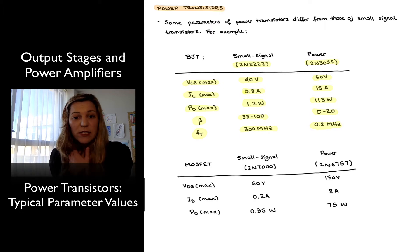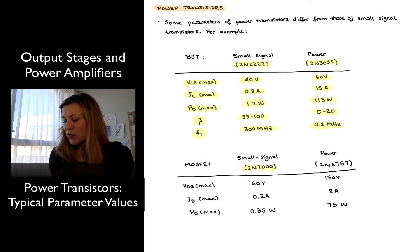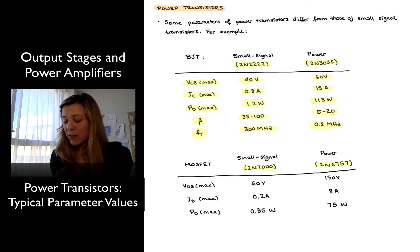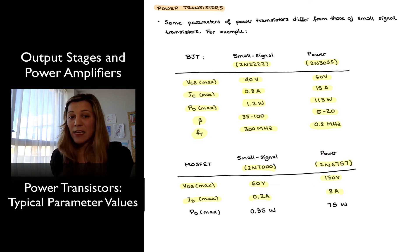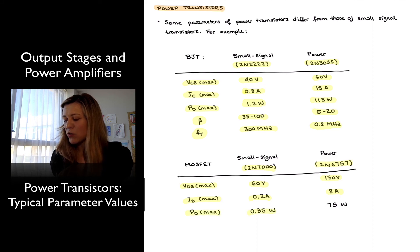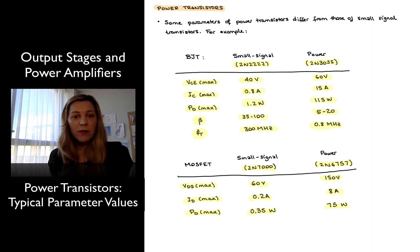In the case of MOSFET transistors, we can also compare a small signal MOSFET, the 2N7000, with a power MOSFET, the 2N6757. As we expect, the drain-to-source voltage maximum is higher for the power MOSFET — 150 volts versus 60 volts for the small signal one. The maximum drain current is 200 milliamps for the small signal MOSFET versus 8 amps for the power MOSFET, and the maximum power dissipation is 350 milliwatts versus 75 watts. These are the parameters directly related to power performance.